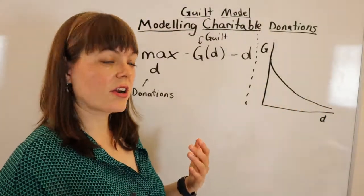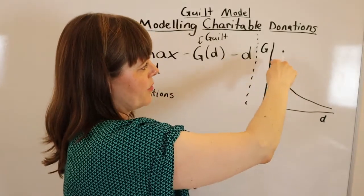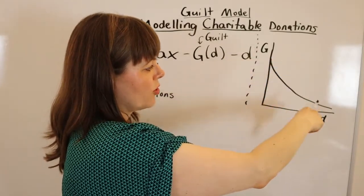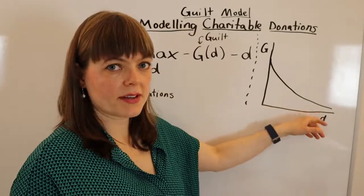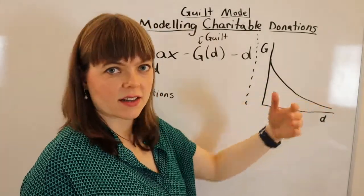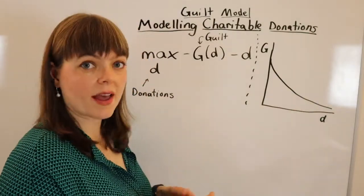And my sense here is that our guilt function looks something like this, that the more you give, the less guilt you're going to have. But after you've given quite a bit, there's a lower reduction in guilt because you've already given money, but that never quite goes away.